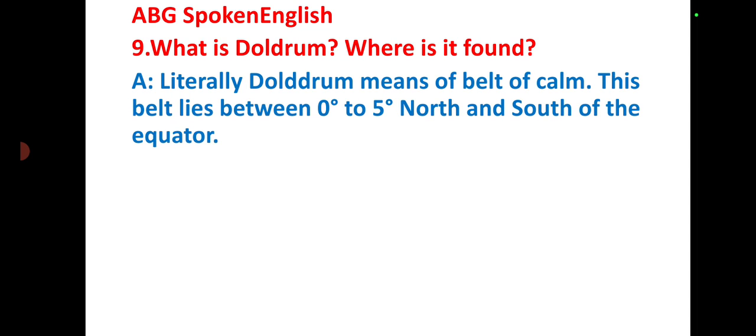What is doldrum? Where is it found? Literally, doldrum means belt of calm. This belt lies between 0 degree to 5 degree north and south of the equator.